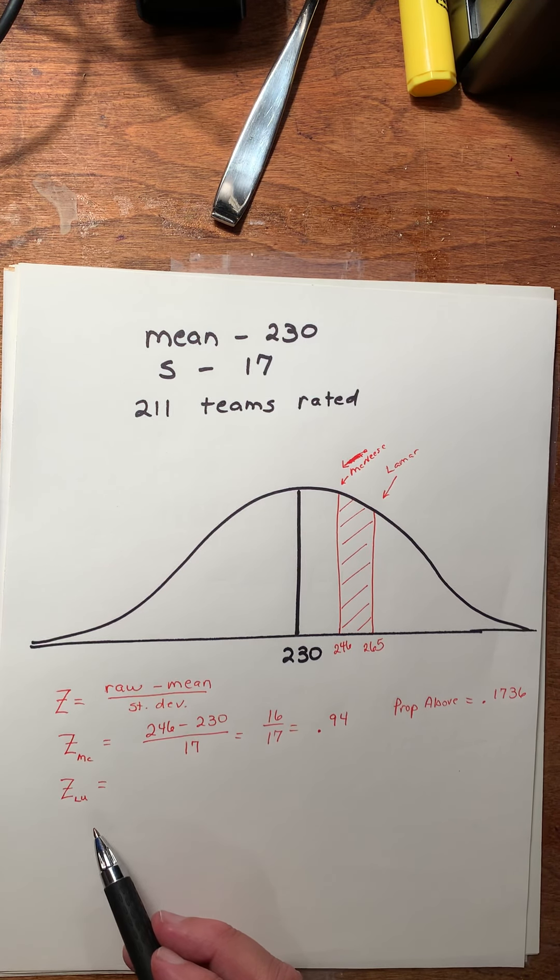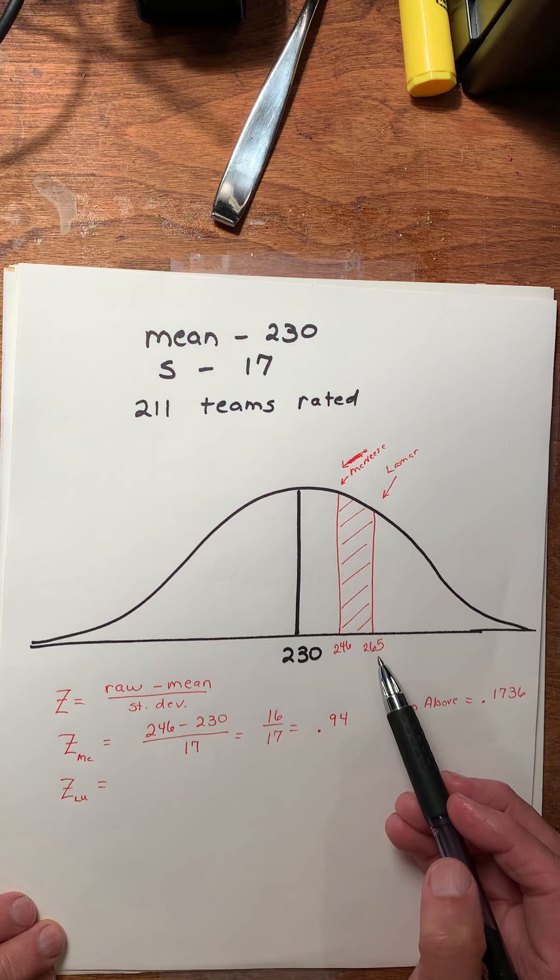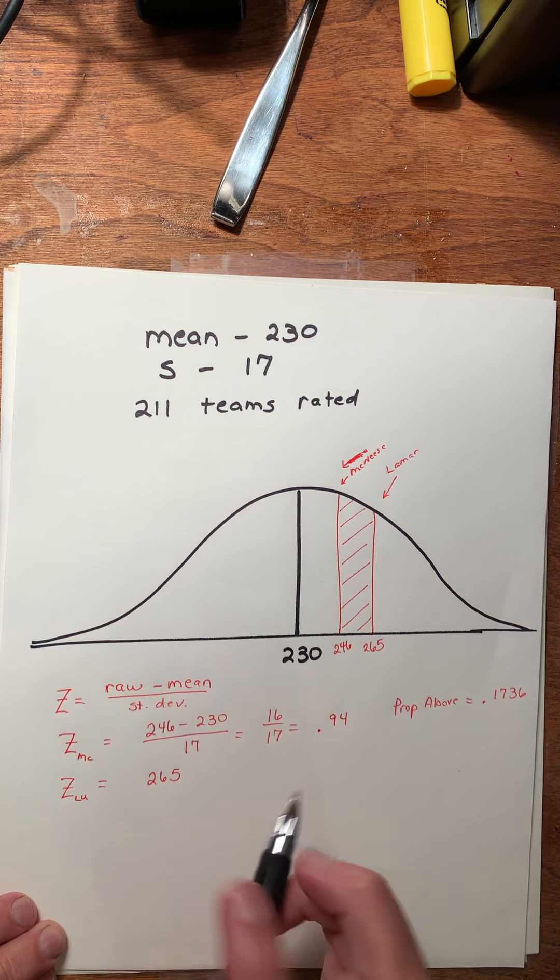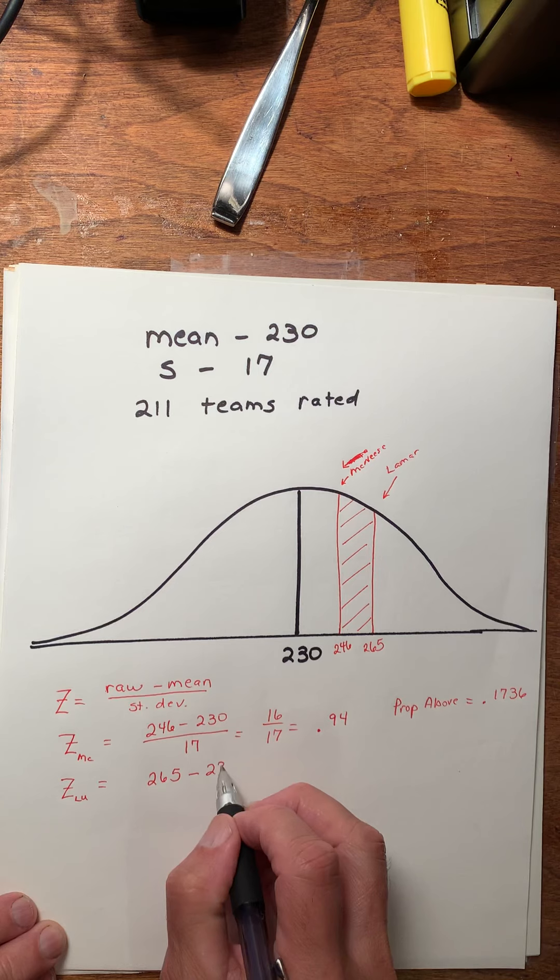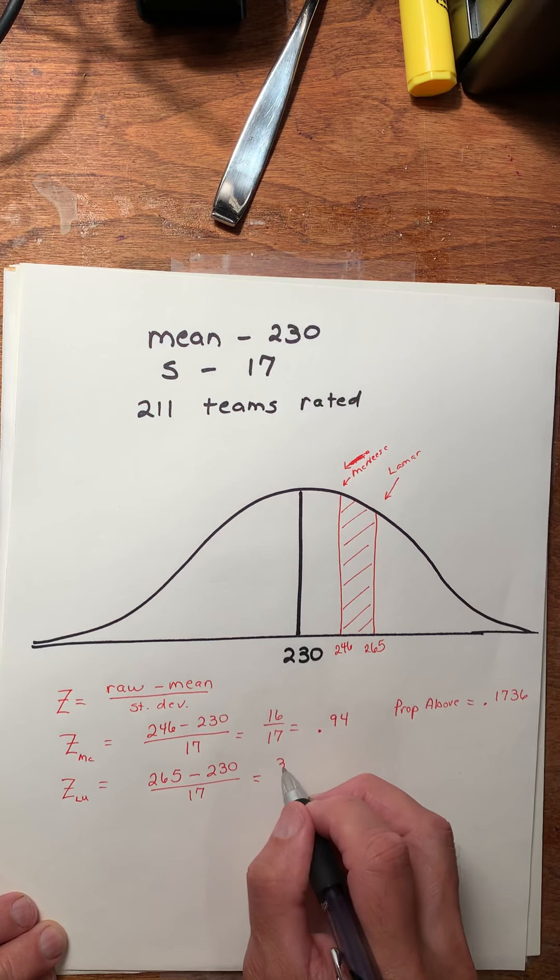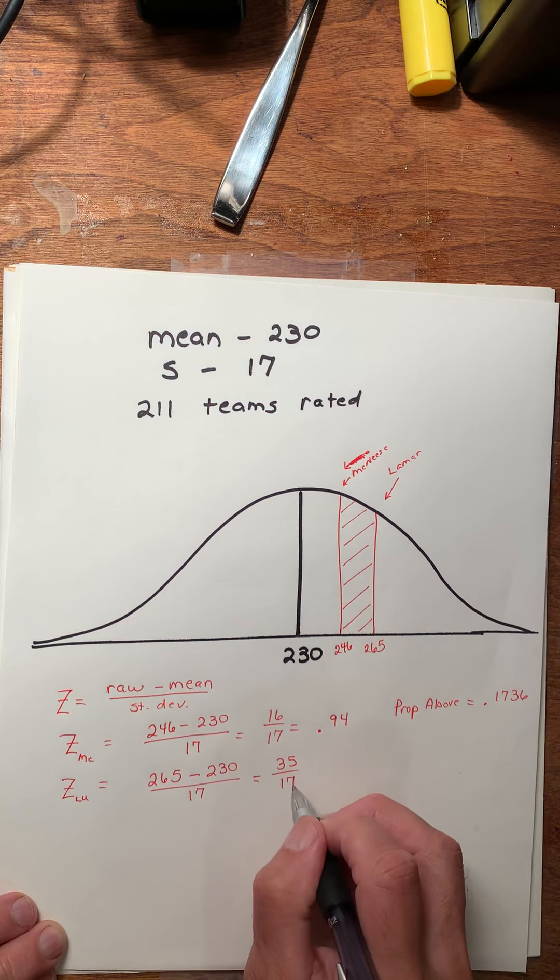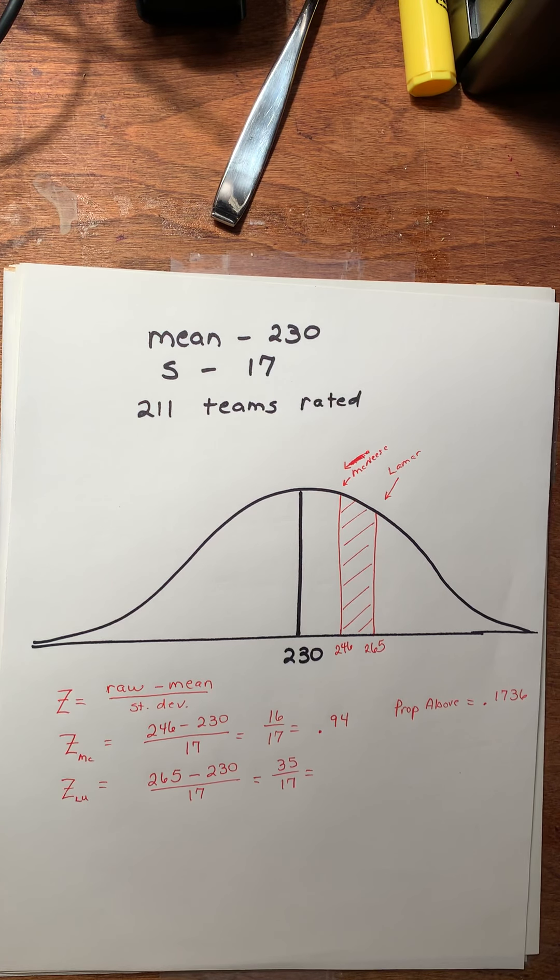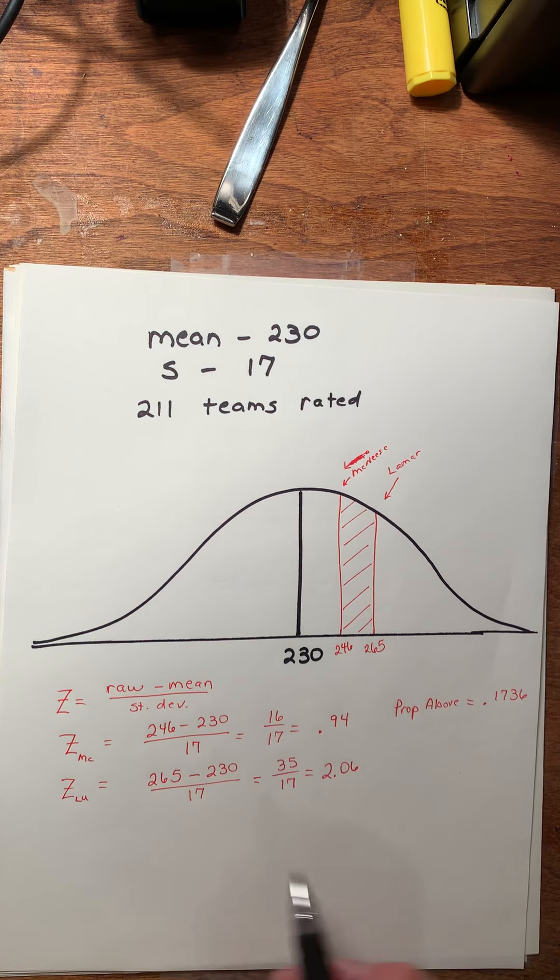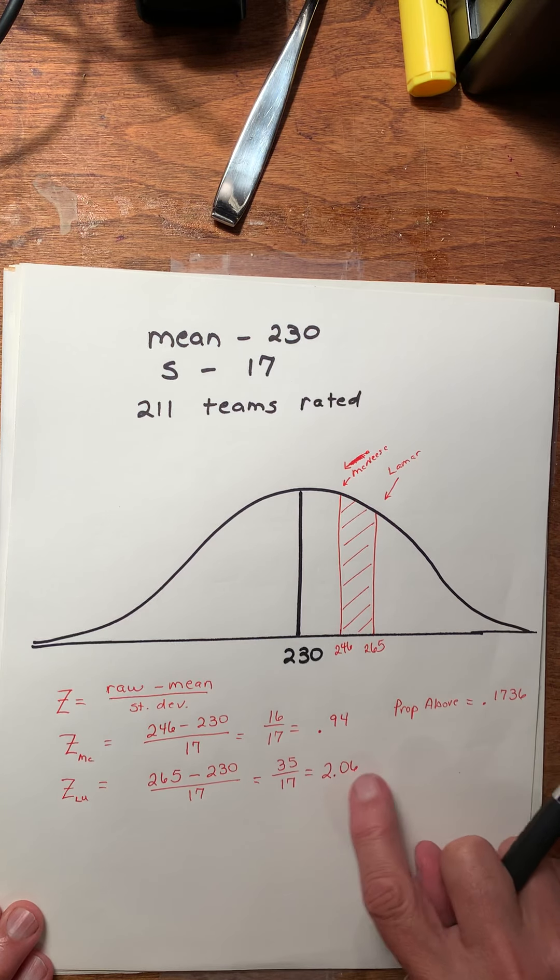We're going to do the same thing with Lamar to find its Z number, except of course my raw score is going to be different, 265. Again, minus the mean, 230, all over the standard deviation of 17. So that's 35 over 17. And my calculator tells me 2.06.